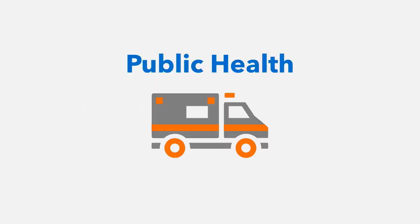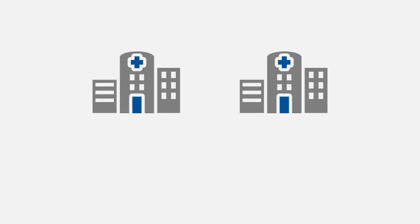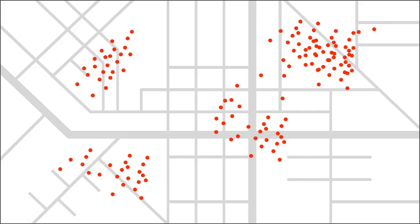Next, we will take a look at an example from public health. A county is experiencing an increase in flu cases. They are looking to set up a mobile health clinic in addition to their existing two health clinics to administer flu vaccines. They have created a map of the confirmed cases. However, the map is not clear on where they should place the mobile health clinic.